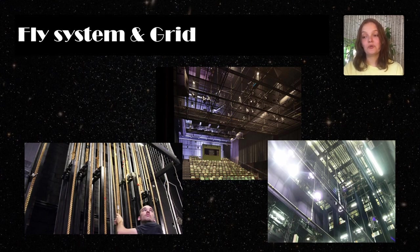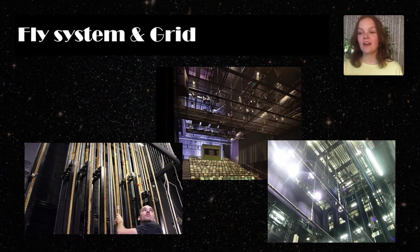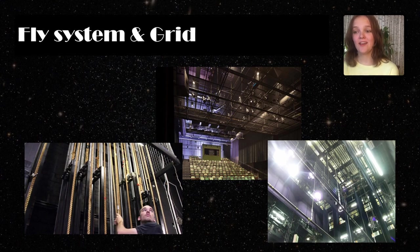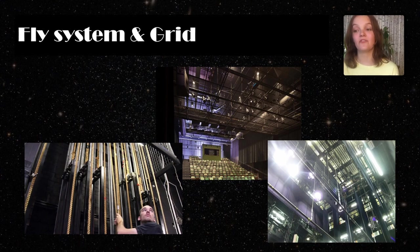This system allows the stage crew to fly elements such as curtains, lights, scenery, stage effects, and occasionally people into and over the stage. The area over the stage is known as the fly tower — located directly above the stage, it's usually one and a half to two and a half times the height of the proscenium arc. The grid is a supporting structure towards the top of the fly tower that supports the pulleys of the flying system. A grid is not included in all fly systems, although it's very frequent in modern theatres.